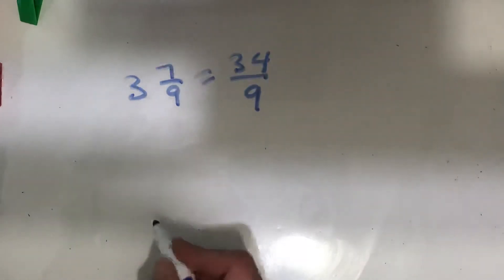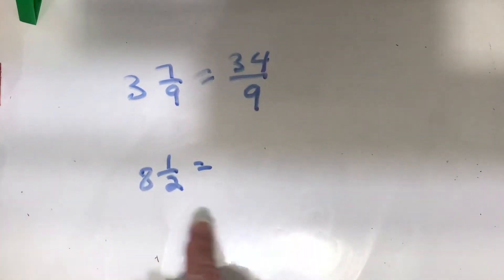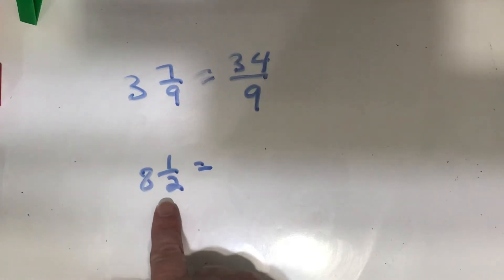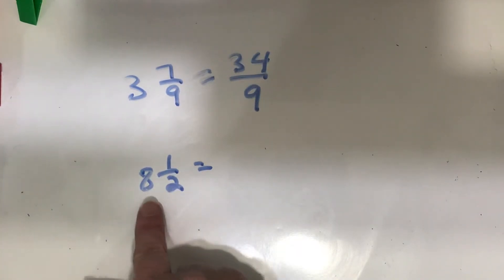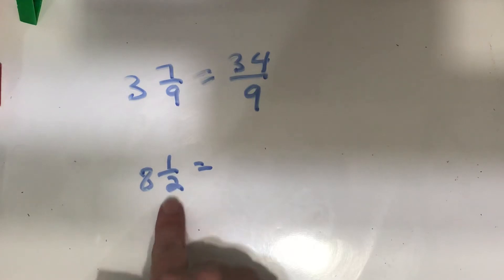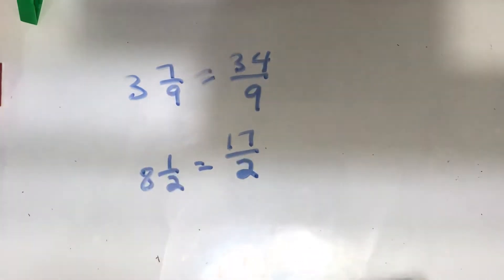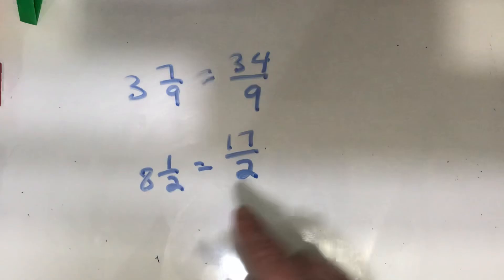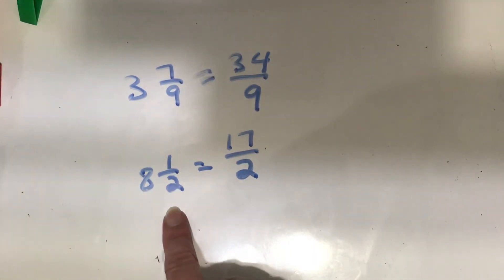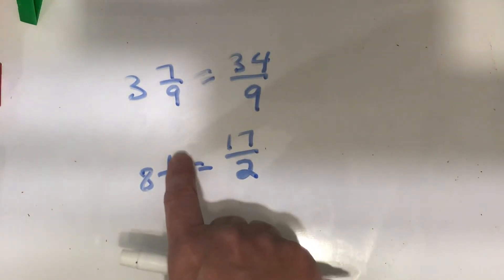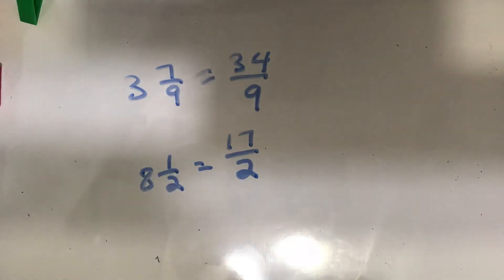If I have eight and one-half, I know that each whole is going to be two halves. I have eight wholes, so eight times two is sixteen, plus one is seventeen — seventeen halves. So what I do is I take my whole number and multiply it times my denominator, and then I add the numerator, because that's my extra one in the last figure.